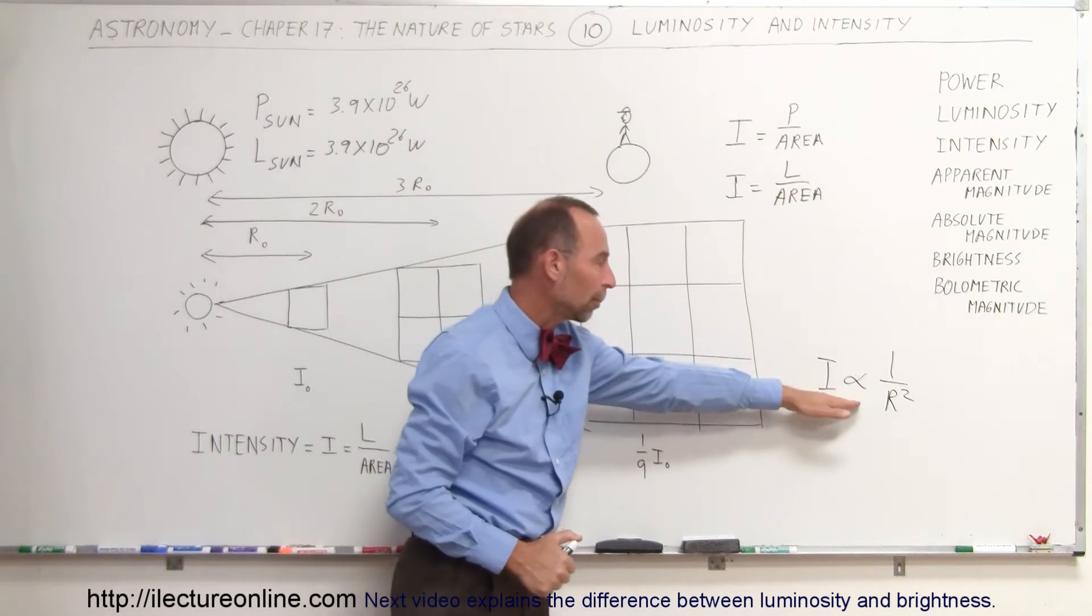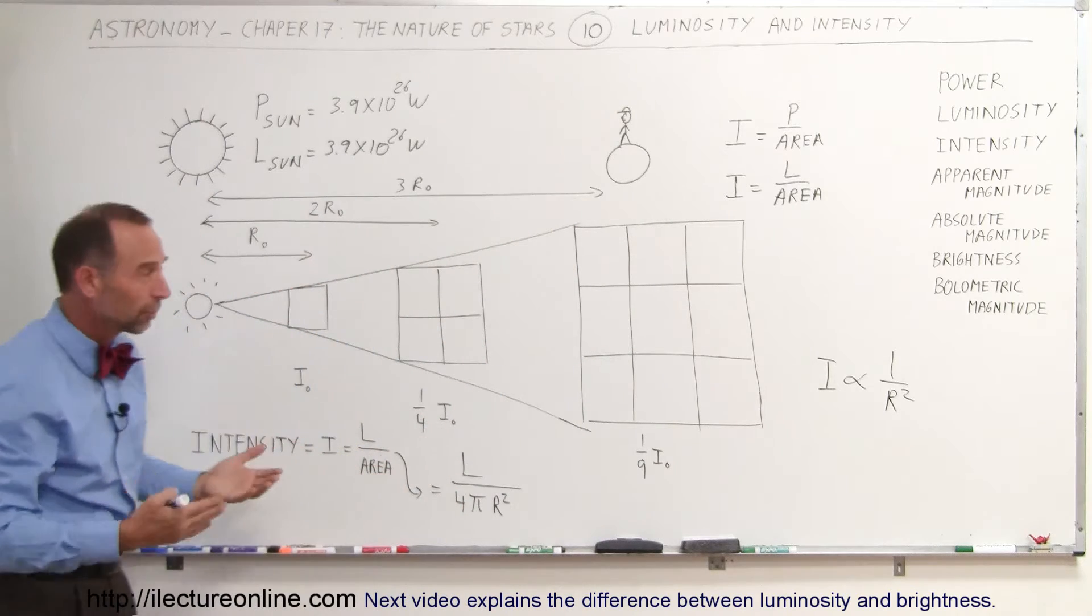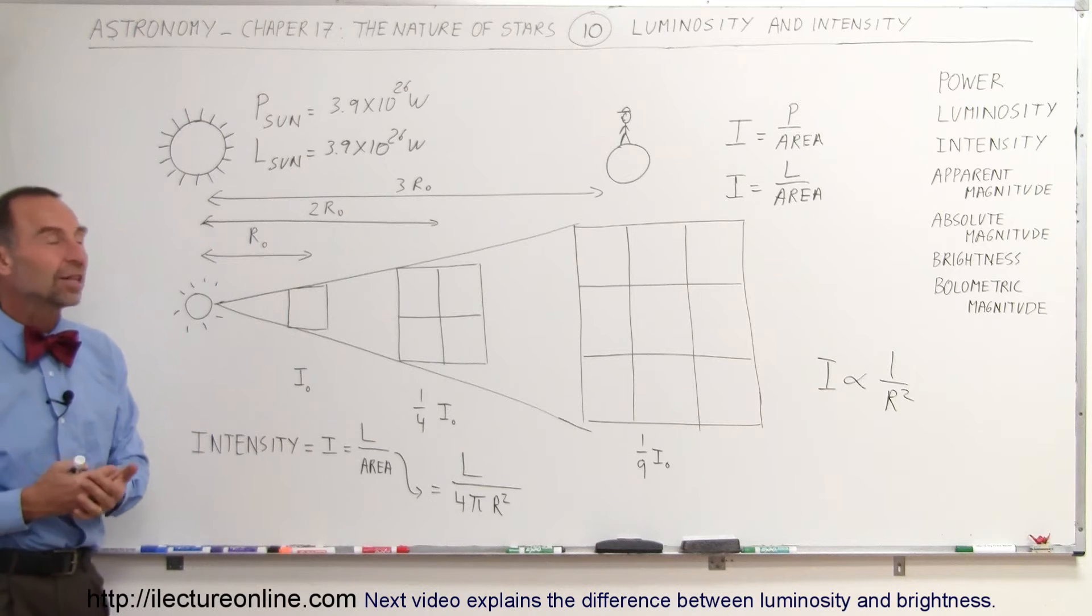That's what we mean by the intensity is proportional to one over the distance squared. You double the distance, one-quarter, triple the distance, one-ninth. Quadruple the distance, you get only one-sixteenth of the intensity.